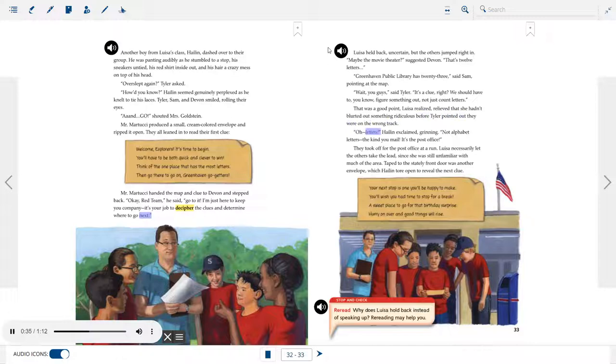Maybe the movie theater, suggested Devon. That's twelve letters. Greenhaven Public Library has twenty-three, said Sam, pointing at the map. Wait, you guys, said Tyler. It's a clue, right? We should have to figure something out, not just count letters. That was a good point, Louisa realized, relieved that she hadn't blurted out something ridiculous before Tyler pointed out they were on the wrong track. Oh, letters, Halen exclaimed, grinning. Not alphabet letters. The kind you mail. It's the post office.